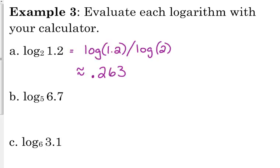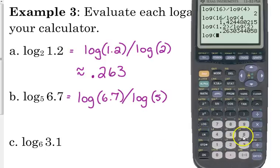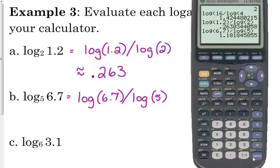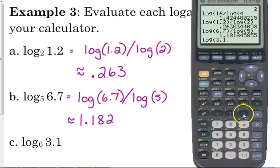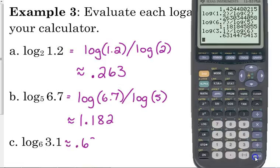So similarly, log base 5 of 6.7, that would be the log of 6.7 divided by the log of 5, and that's approximately 1.182. I always do about 3 numbers after the decimal just to be precise. Log base 6 of 3.1, log of 3.1 divided by the log of 6 is approximately 0.631.